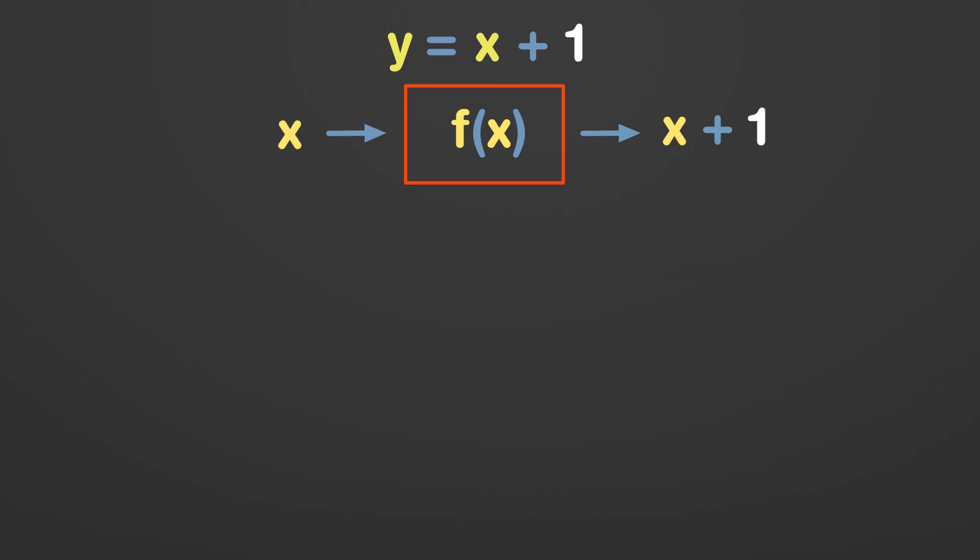Now, let's make things a bit more interesting by squaring the x term. Let's take 1 as input, which gives 2 as output. If we take 2 as input, the output equals 5. For 3 as input, the output equals 10. Now, take negative 1, negative 2, and negative 3 as inputs.